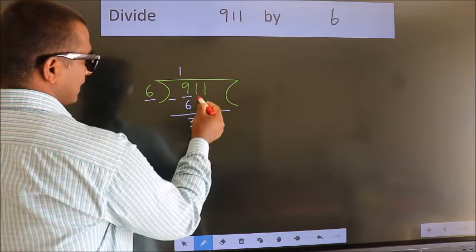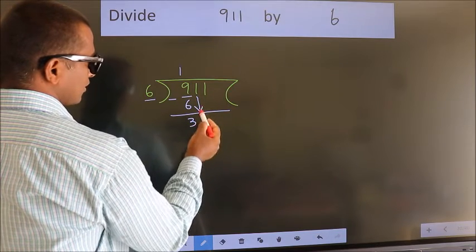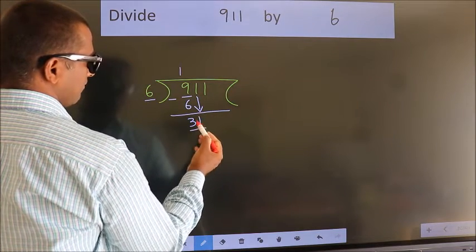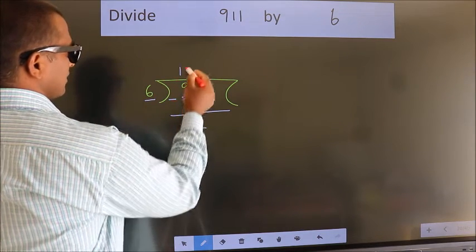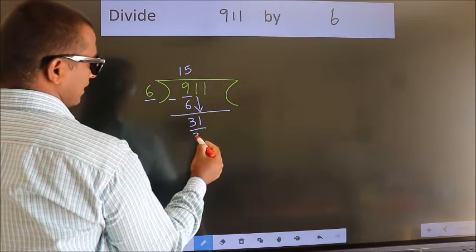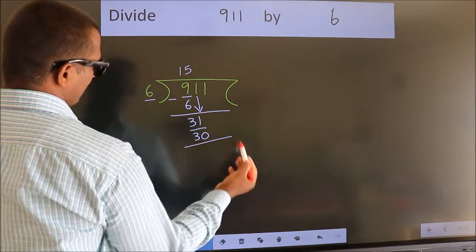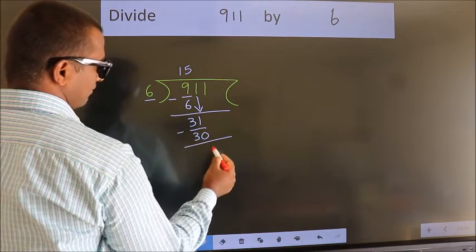After this, bring down the beside number. So, 1 down. So, 31. A number close to 31 in the 6 table is 6 times 5 equals 30. Now we subtract. We get 1.